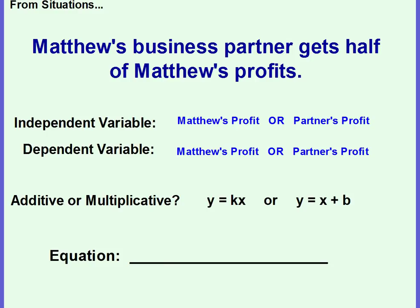Okay, Matthew's business partner gets half of Matthew's profits. So we're comparing Matthew's profit to his partner's profit. So what do you have to know? Well, you know that the business partner gets half, but you don't know how much money the business partner is going to get unless you know how much profit Matthew makes. So Matthew is the independent, and the partner would be the dependent.